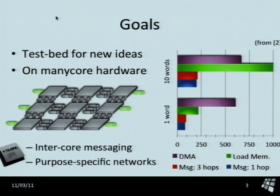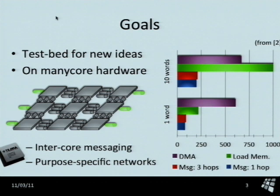If you want to implement a virtual machine for these kinds of systems, you have to know that the performance to go to main memory is not really good. If you want to transfer 10 words from main memory to another core, it takes like 1,000 clock cycles. But if you actually send a message with one of the other networks directly between cores, it takes significantly less time. That was one of the main observations which influenced the design of that virtual machine — we want to leverage the hardware capability of direct message passing between different cores.